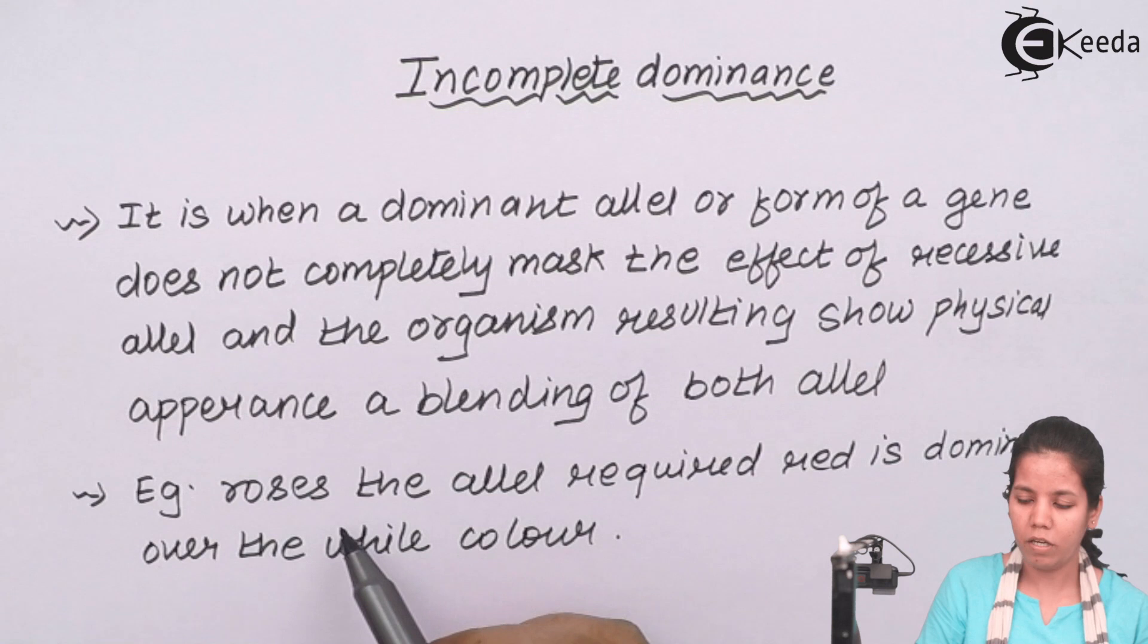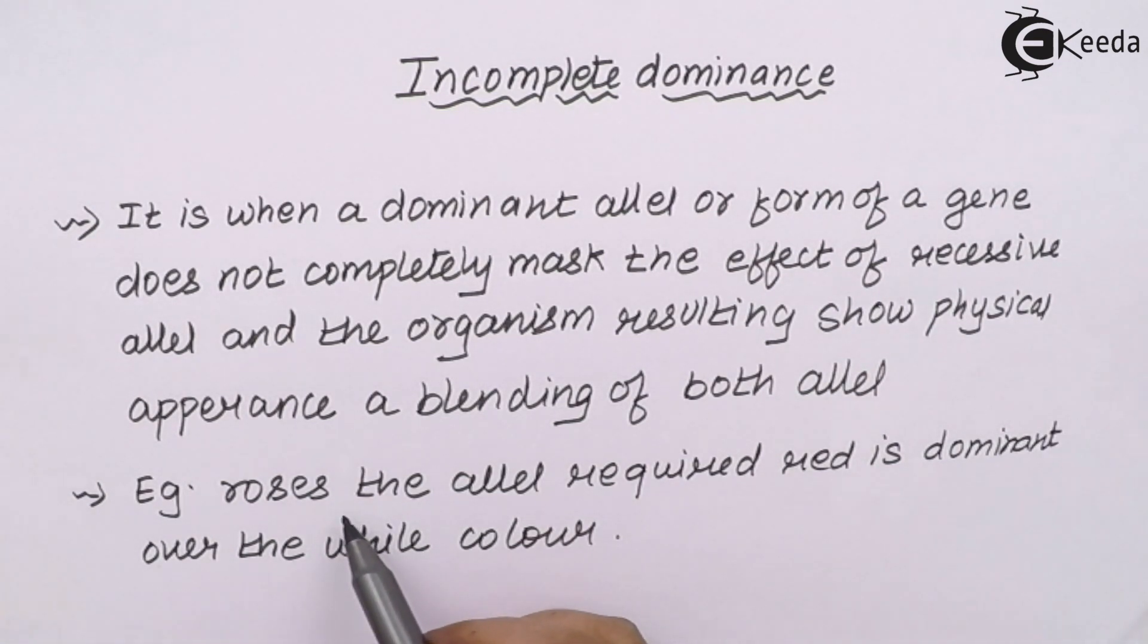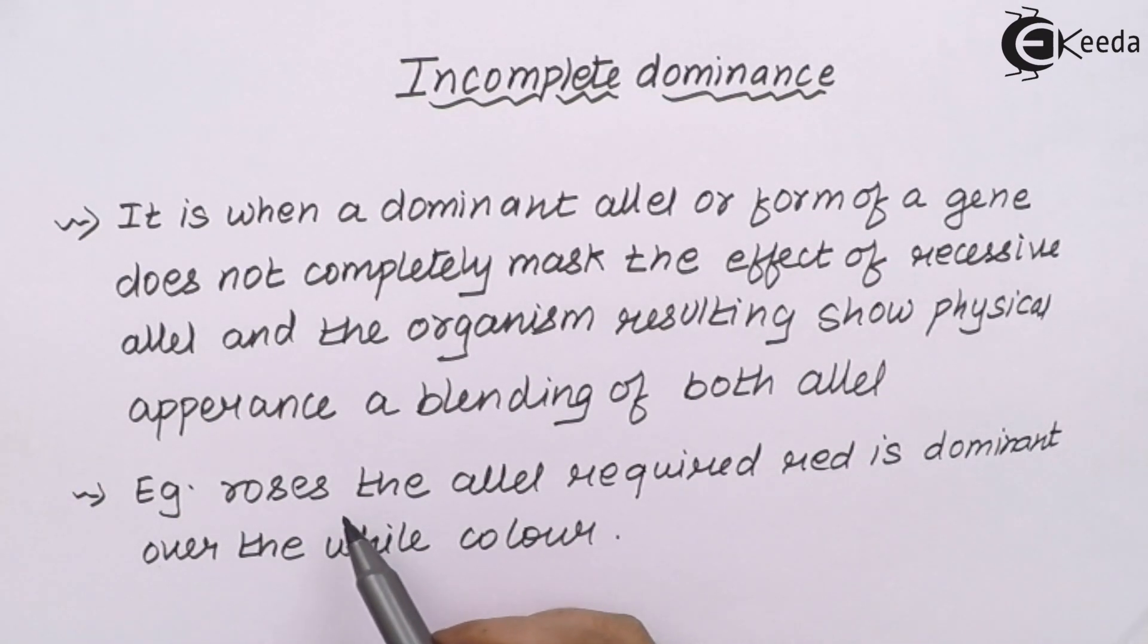In roses, we all have seen the red variety of rose and the white variety of rose. Always the red variety is the dominant or the strongest one, whether it is homozygous dominant or heterozygous dominant, whereas the white variety, whether it is in homozygous condition or in heterozygous condition, is always recessive or the weak partner.